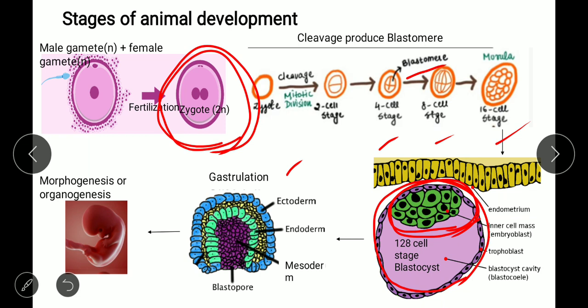After gastrulation comes morphogenesis and organogenesis, during which organs form from the tissue layers. To summarize the stages: gametogenesis forms gametes; fertilization produces the zygote; cleavage produces blastomeres; morula is the 16-cell stage; blastocyst is the 128-cell stage; gastrulation forms the three embryonic tissue layers — ectoderm, mesoderm, and endoderm.